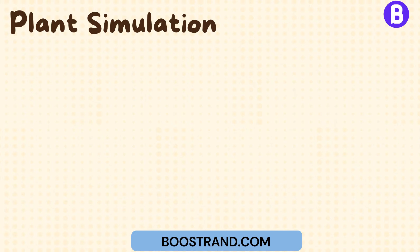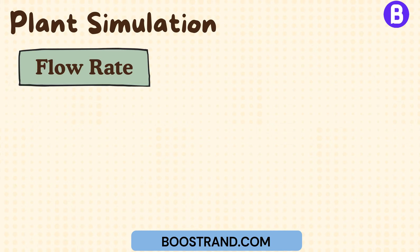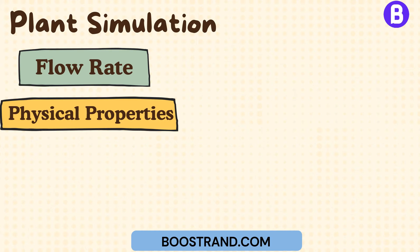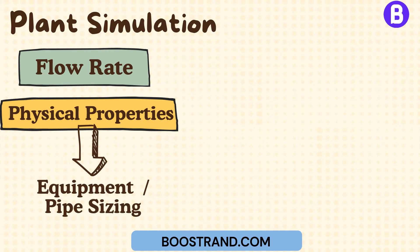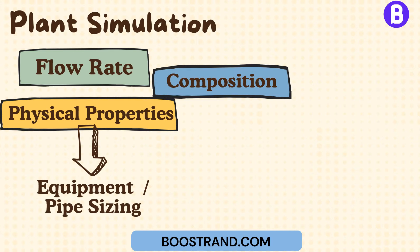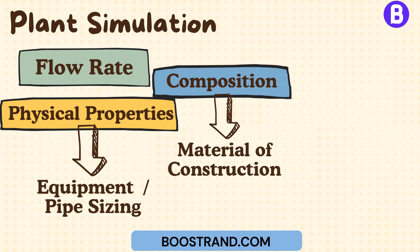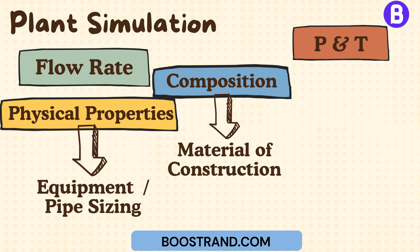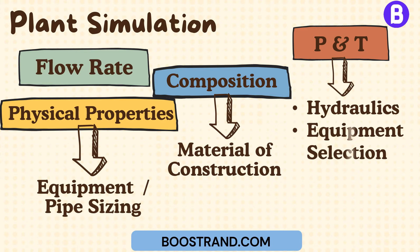Knowing this information is essential for carrying out all downstream activities. For example, when we know the flow rate and physical properties, we can begin sizing activities of equipment and piping. Through the fluid composition, we can know the material of construction of different process components. Operating pressure and temperature are also essential to carry out hydraulic calculations and equipment selection.